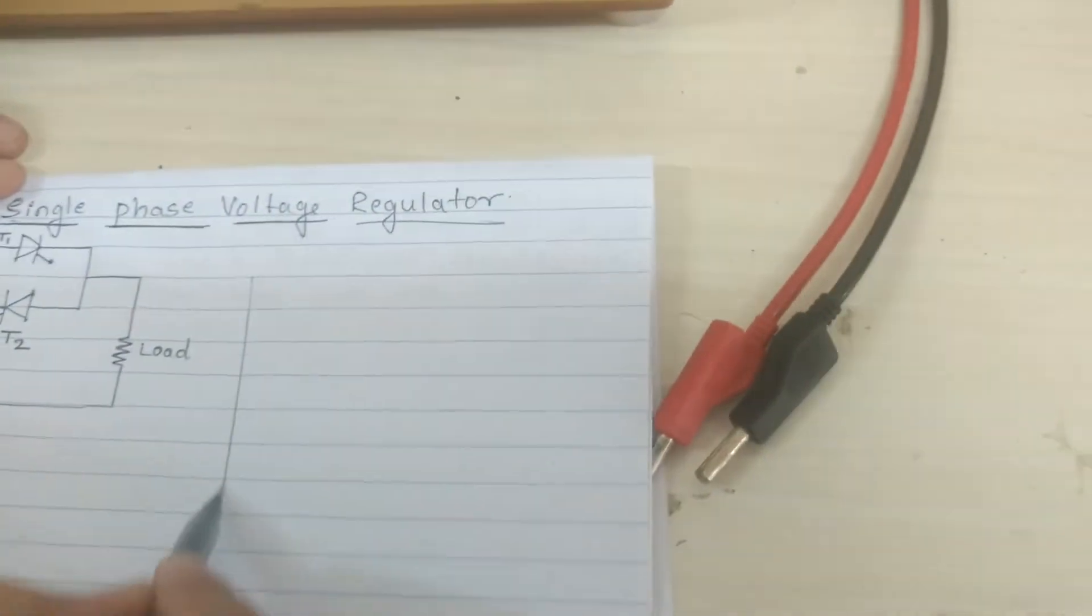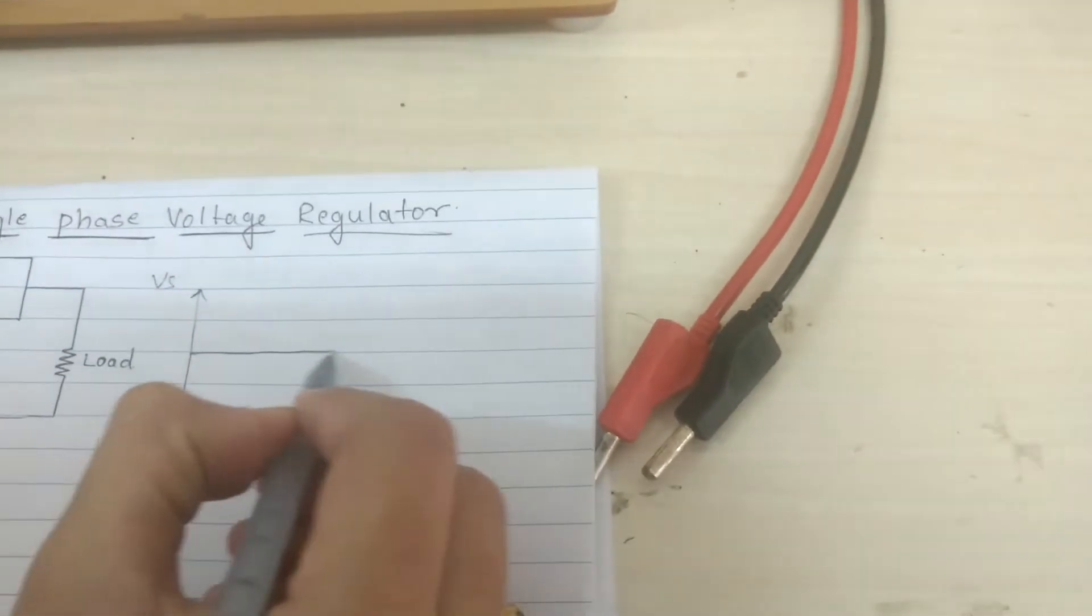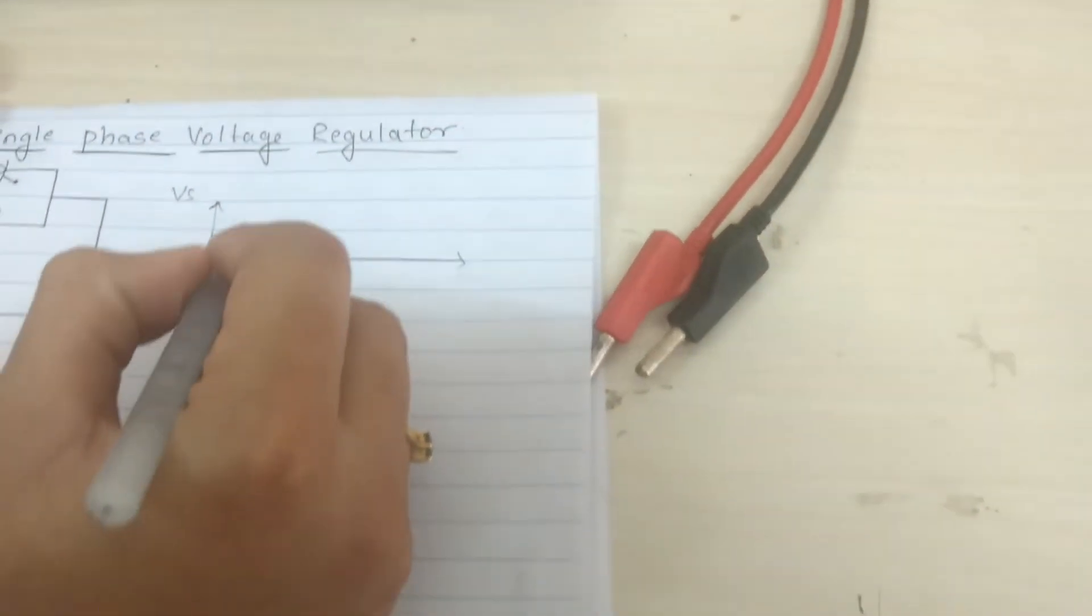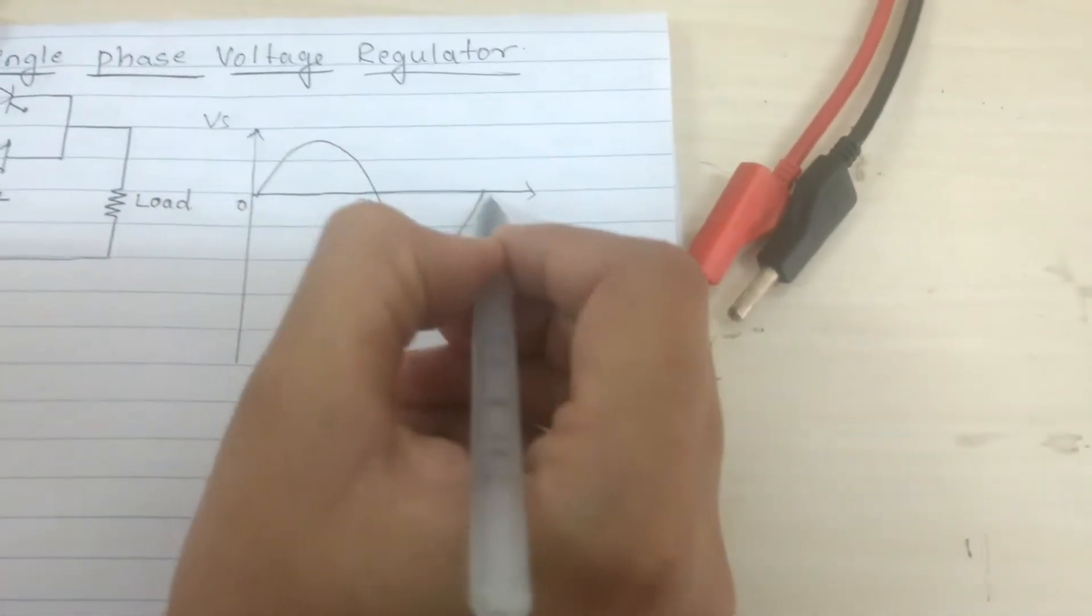Now we will see the output waveform. So our supply is fixed AC supply, that is 230 volt. This is a fixed supply, 0 to pi to 2 pi.